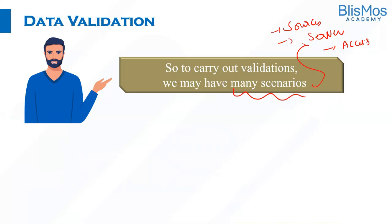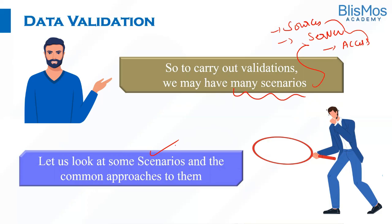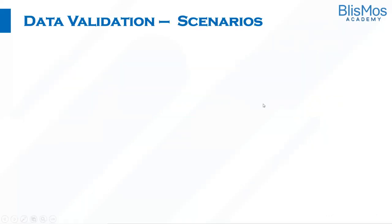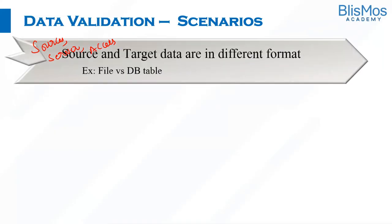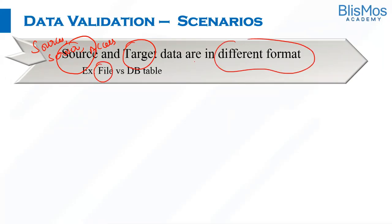Let us look at some scenarios and the common approaches to them. The important scenarios are based on whether the sources are installed on the same server or not, and whether the testing team has access. One of the very basic scenarios is where source and target are in a different format — for example, source may be in a file format but the target is in a database format.